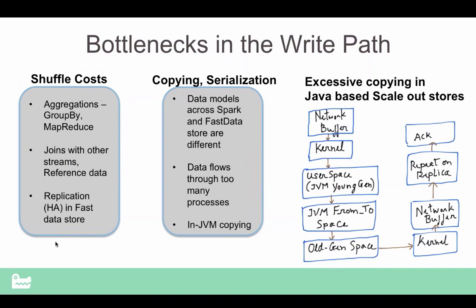From a shuffle standpoint: aggregations, group-by, and map-reduce all involve shuffles. Shuffles go through stages, and a Spark stage has to fully finish before the next stage begins, which causes a lot of trouble. Similarly, joins inside Spark — whether with other streams, historical streams, or reference data — become very expensive.